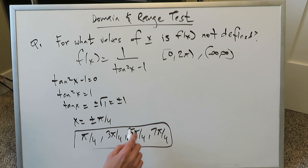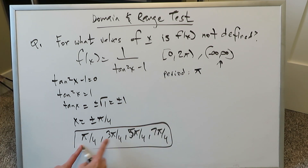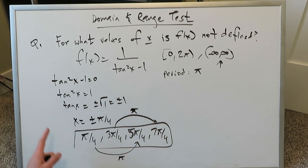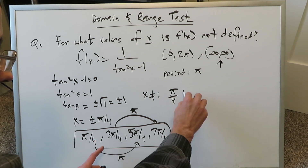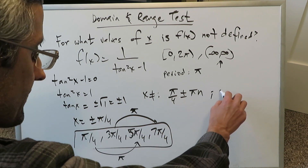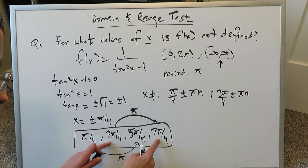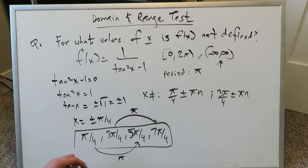For the domain of minus infinity to infinity, remember that the period of a tangent function is π. Starting from π over 4, you land at 5π over 4 (π units away); from 3π over 4, you land at 7π over 4. So for x cannot equal these values across the entire real line, the answer is: x cannot equal π over 4 plus or minus nπ — capturing π over 4, 5π over 4, and their reflections — and also 3π over 4 plus or minus nπ, capturing 135° and 315°. This is your completed answer for the full domain.